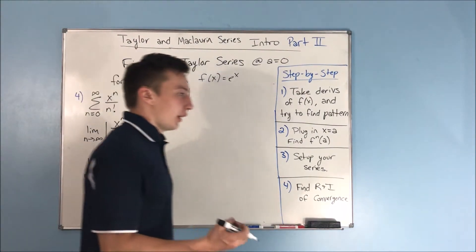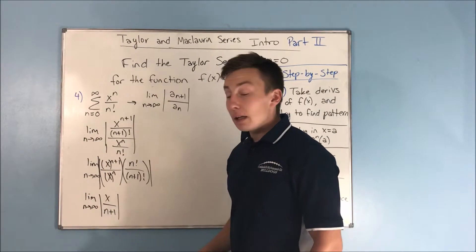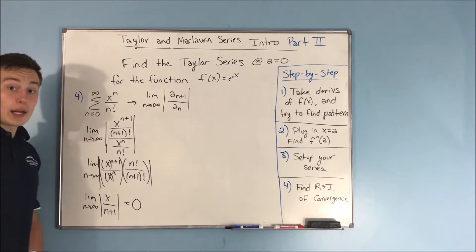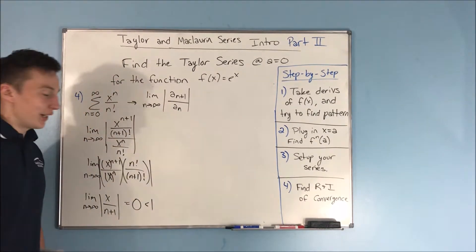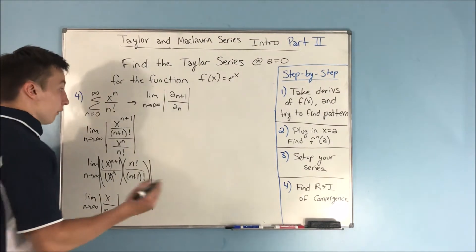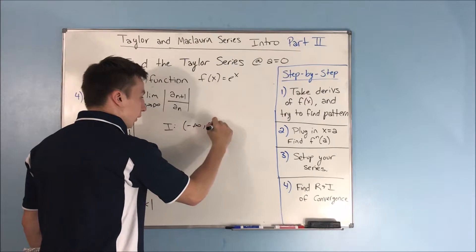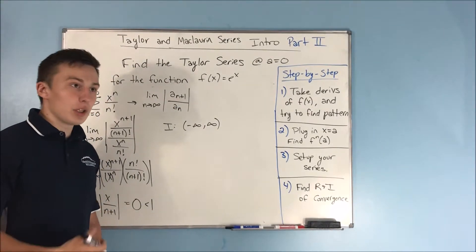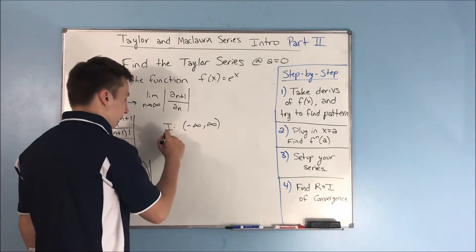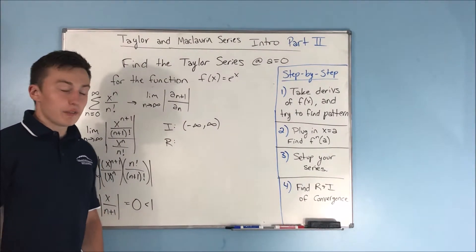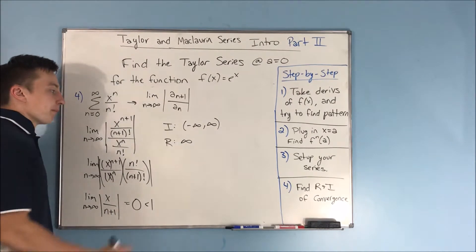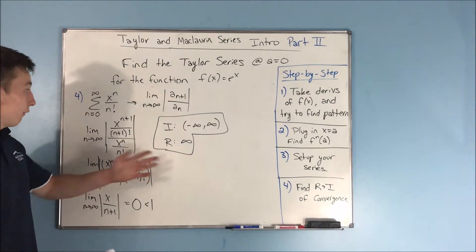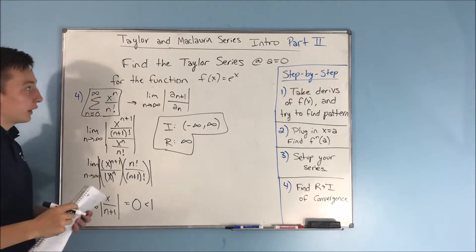Notice that as n approaches infinity, the denominator becomes infinitely large. It doesn't matter what you put in for x — this limit will equal 0 for all x. That's less than 1, so the interval of convergence is negative infinity to infinity. Since we're talking about an infinitely long interval, we don't have to check any endpoints. The radius of convergence is infinity. So you have your interval of convergence and your radius of convergence, and you have your series representing this function.